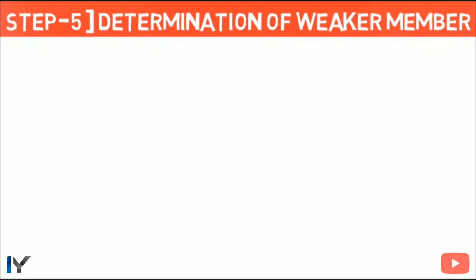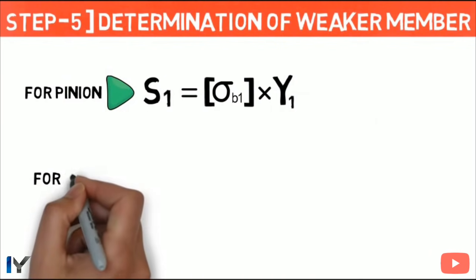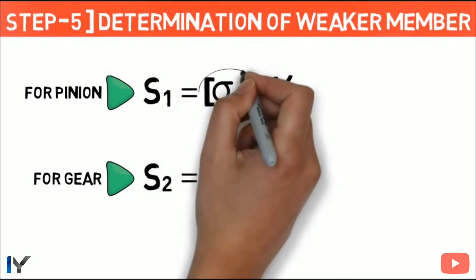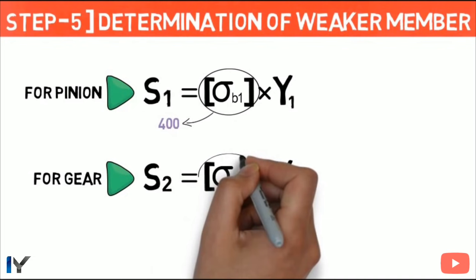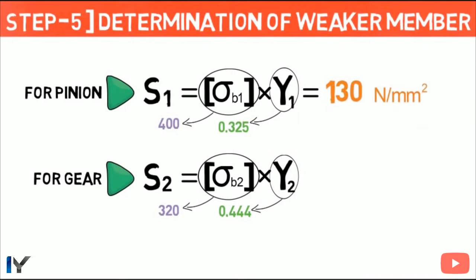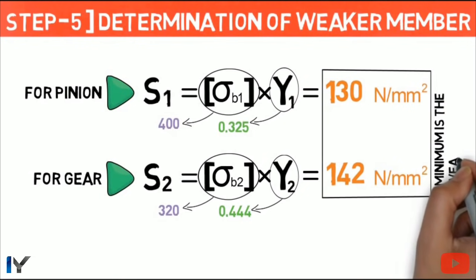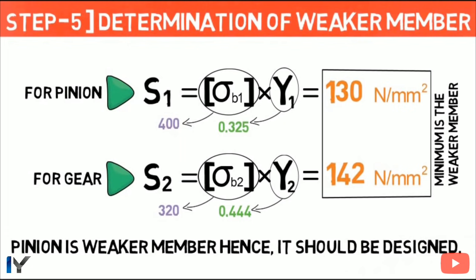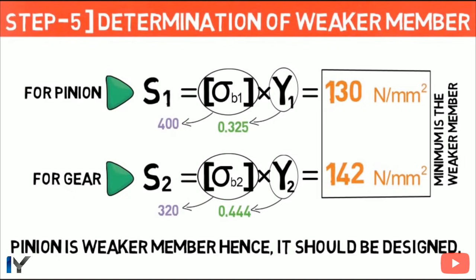Step 5: Determination of weaker member. S1 = σB1 × Y1 = 400 × 0.325 = 130 N/mm² for pinion. S2 = σB2 × Y2 = 320 × 0.444 = 142 N/mm² for gear. The minimum value corresponds to the weaker member, so the pinion is weaker. Hence, the pinion should be designed, and we will use pinion values for the remaining steps.